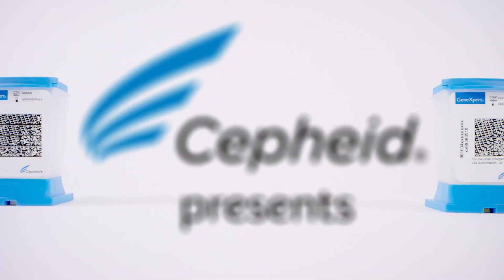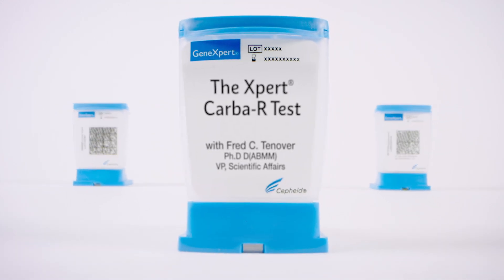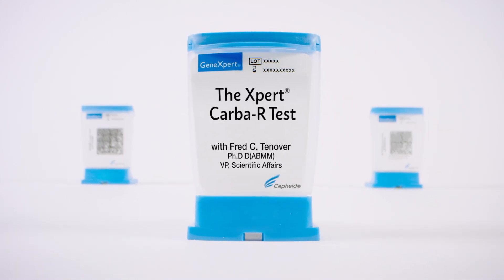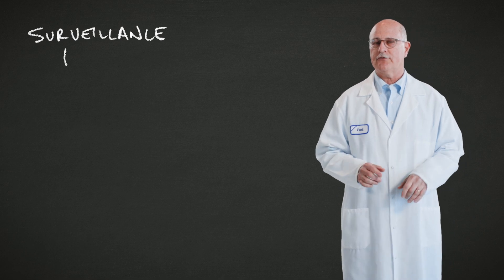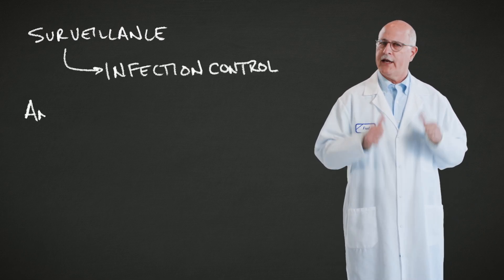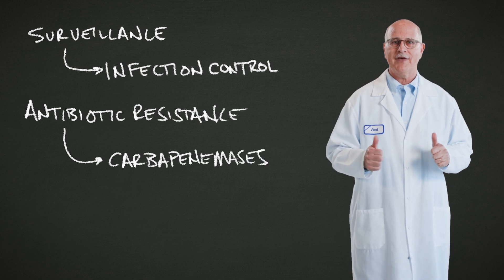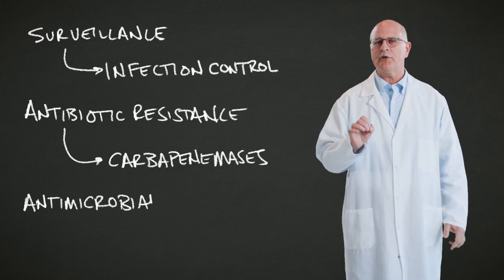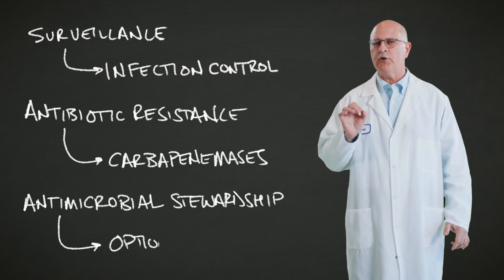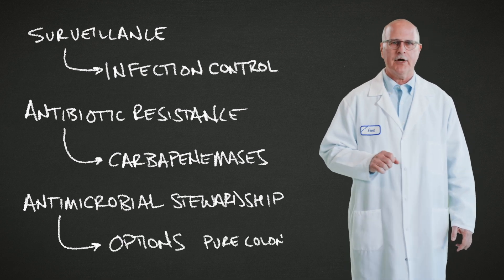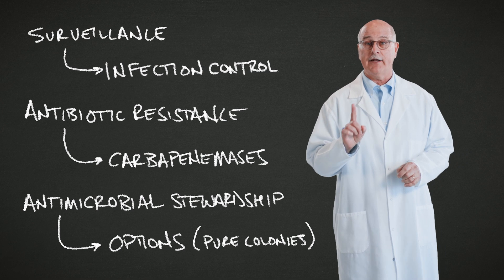Today we're going to discuss the expert CARB-R test, which is a really versatile cartridge. It's a surveillance test for infection control, an antibiotic resistance test for carbapenemases, and an antimicrobial stewardship tool to guide therapeutic options when you're testing pure colonies. And all of that is on label.